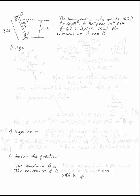Homogeneous gate weighs 100 pounds. The depth into the page perpendicular to the gate is 3 feet. Gamma for water is 62.4 pounds per foot cubed. What we want to do is find the reactions at the two pins, A and B. B is a roller, A is an actual pin.